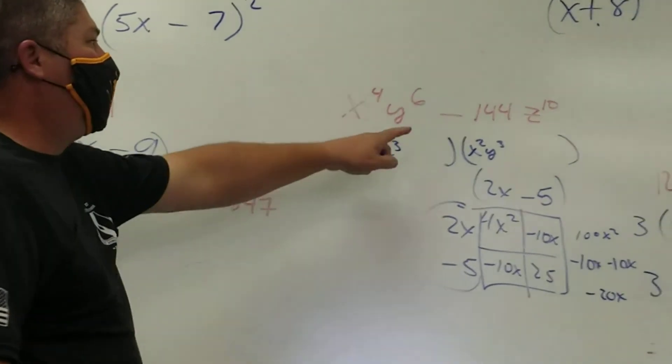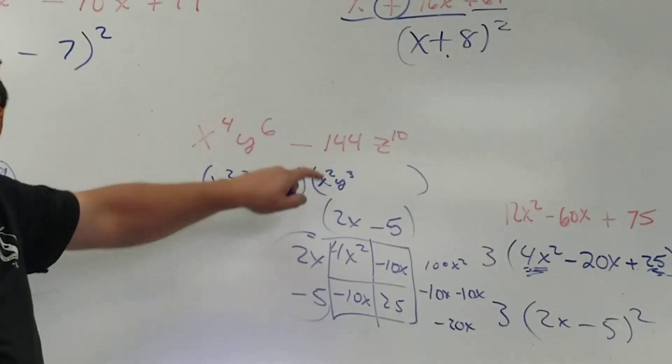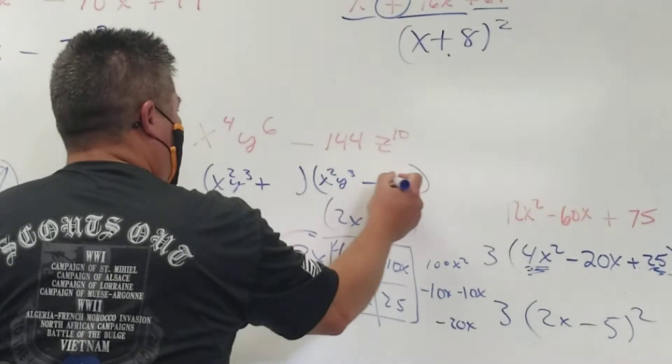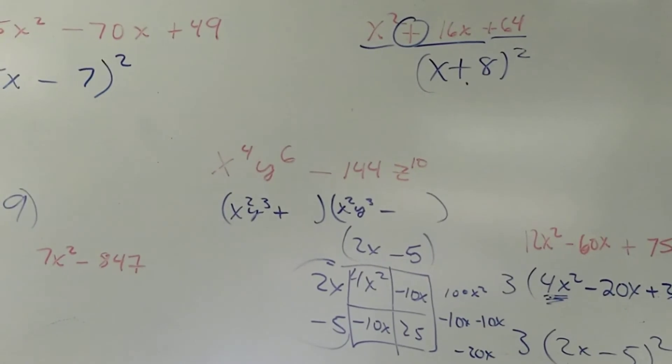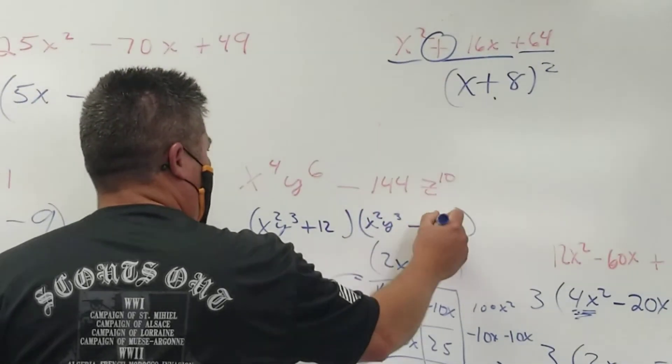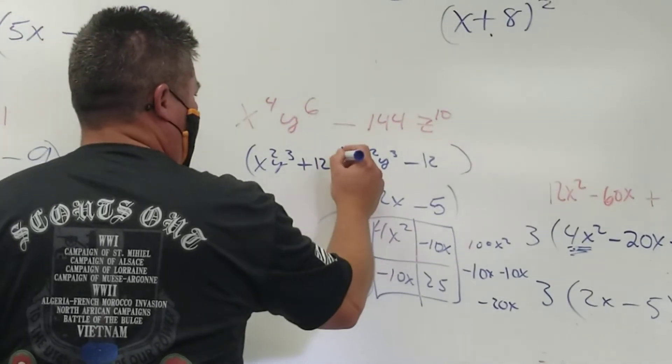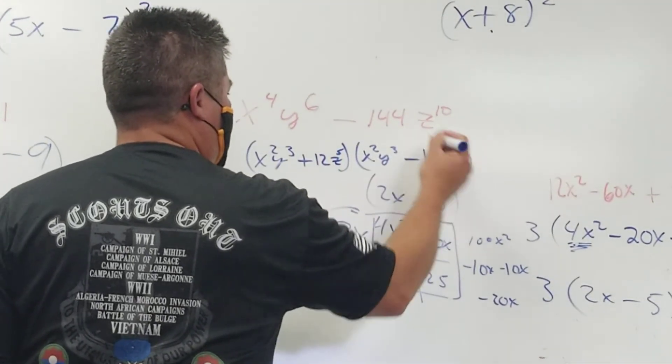All right. Now, how about this one? Difference. Signs must be what? Different. One's plus and one's what? Minus. But perfect squares. What's the square root of 144? 12 and 12. What's the square root of z to the 10th? Z to the 5th. Z to the 5th.